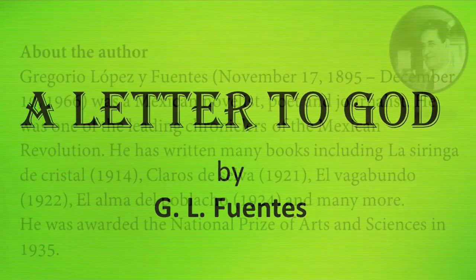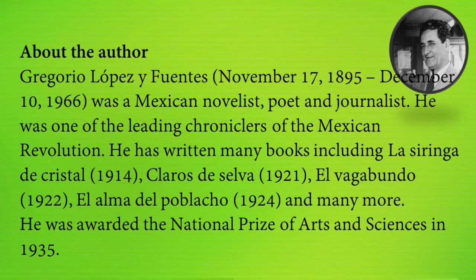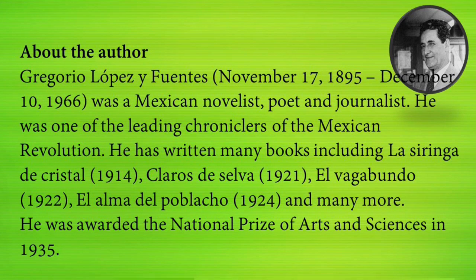About the author: Gregorio López was a Mexican novelist, poet and journalist. He was one of the leading chroniclers of the Mexican Revolution. He has written many books including La Siringa de Cristal, Clarus de Silva, El Vagabundo, El Alma del Poblaco and many more. He was awarded the National Prize of Arts and Sciences in 1935.